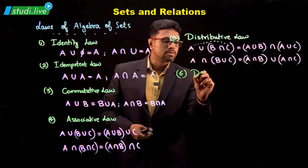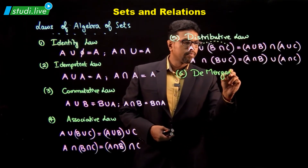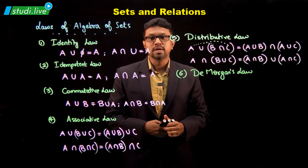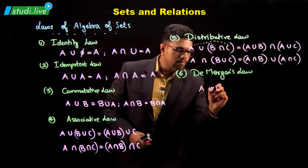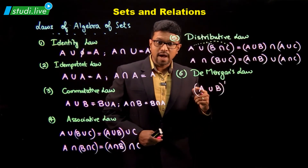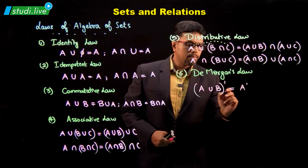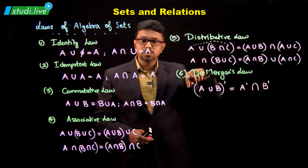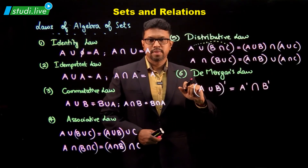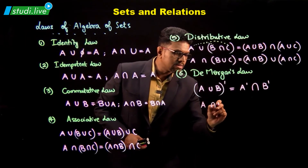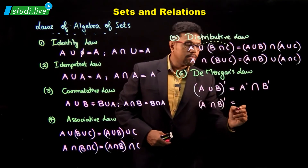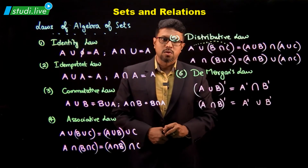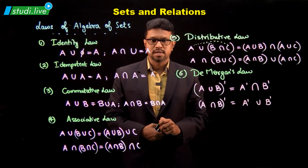Next we have De Morgan's law. In this, the complement is distributed over union or intersection. So (A union B) complement can be written as A complement intersection B complement — remember, when the complement goes inside, union becomes intersection. Similarly, (A intersection B) complement becomes A complement union B complement. This is what is happening in De Morgan's law.